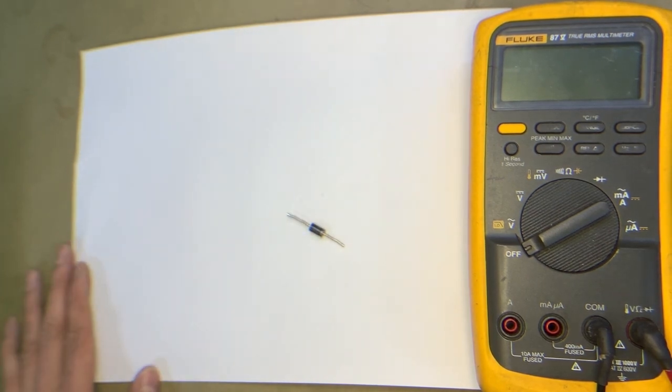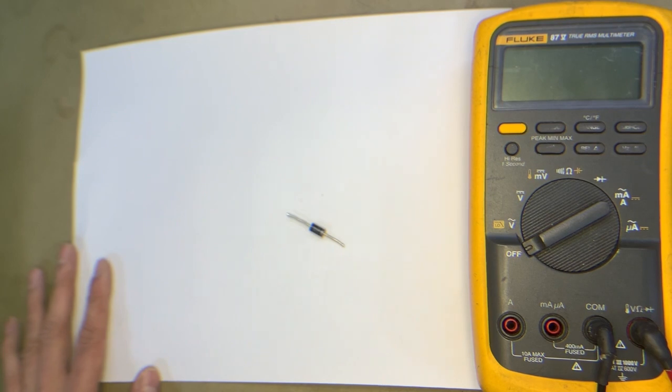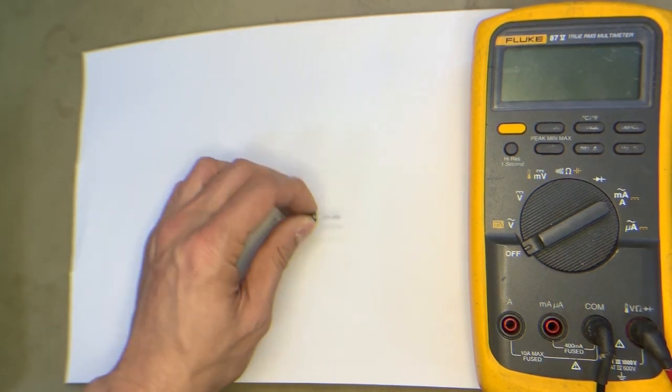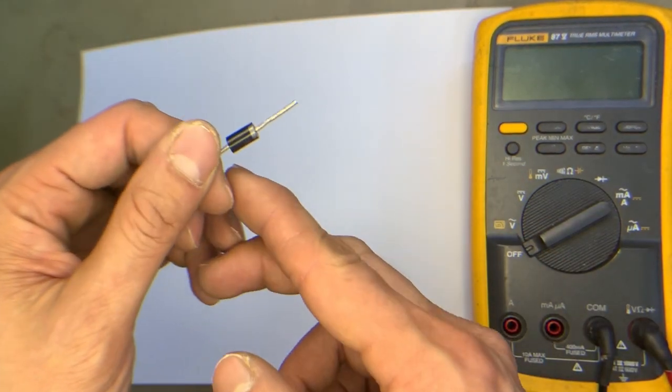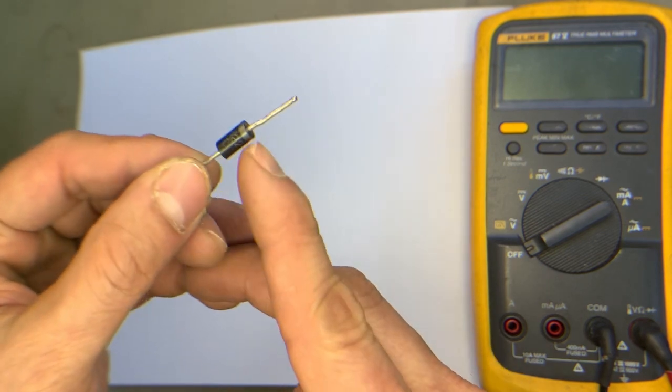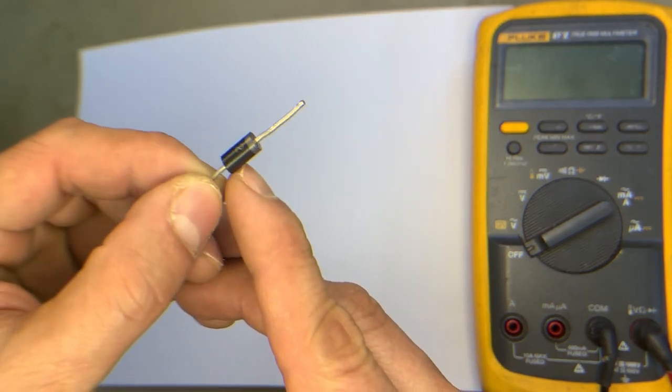Hello everyone, welcome back to my channel. In this video, I'll show you how to identify the anode and cathode of a diode. There are three methods to identify the electrodes of a diode.